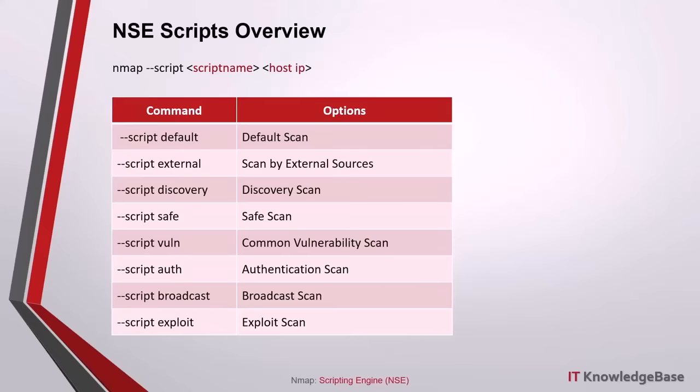Scripts that use brute force attacks to determine credentials are placed in the brute category instead. --script broadcast: scripts in this category typically discover hosts not listed on the command line by broadcasting on the local network. Use the newtargets scripts argument to allow these scripts to automatically add discovered hosts to the NMAP scanning queue. --script exploit: these scripts aim to actively exploit some vulnerabilities. Examples include jdwp-exec and http-shellshock.